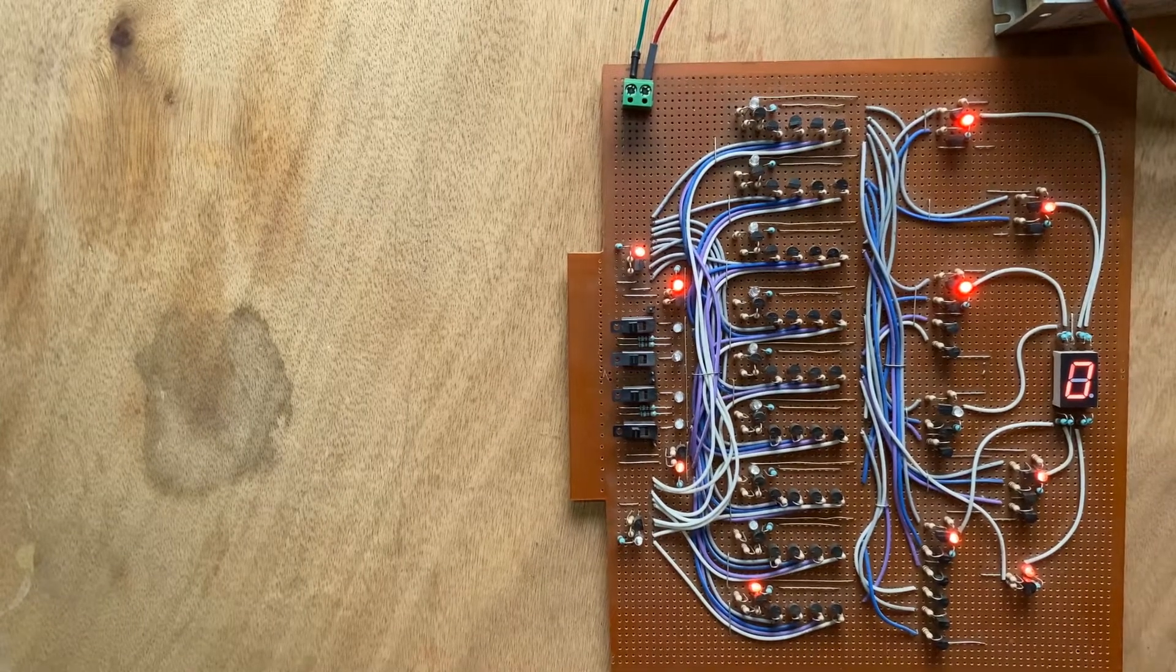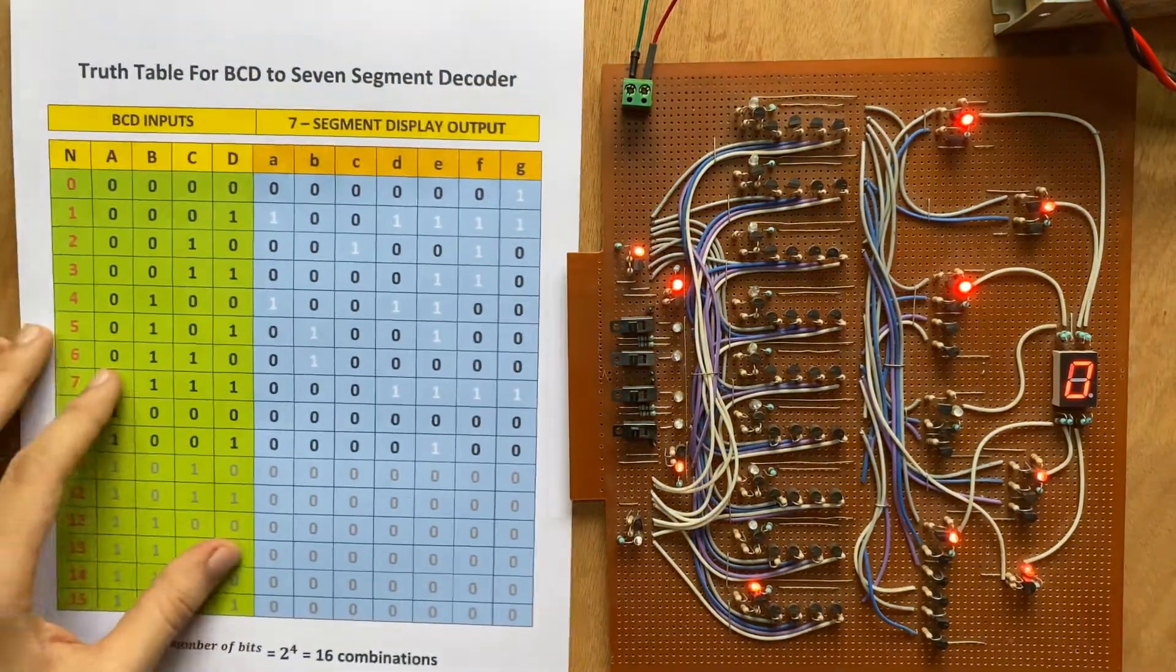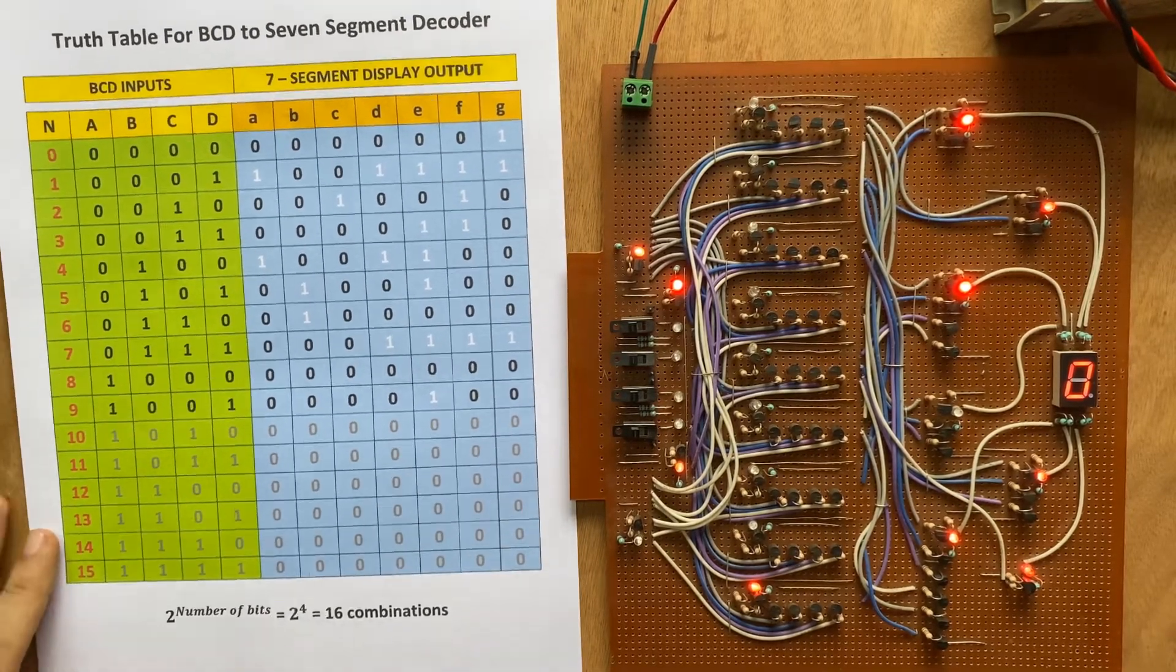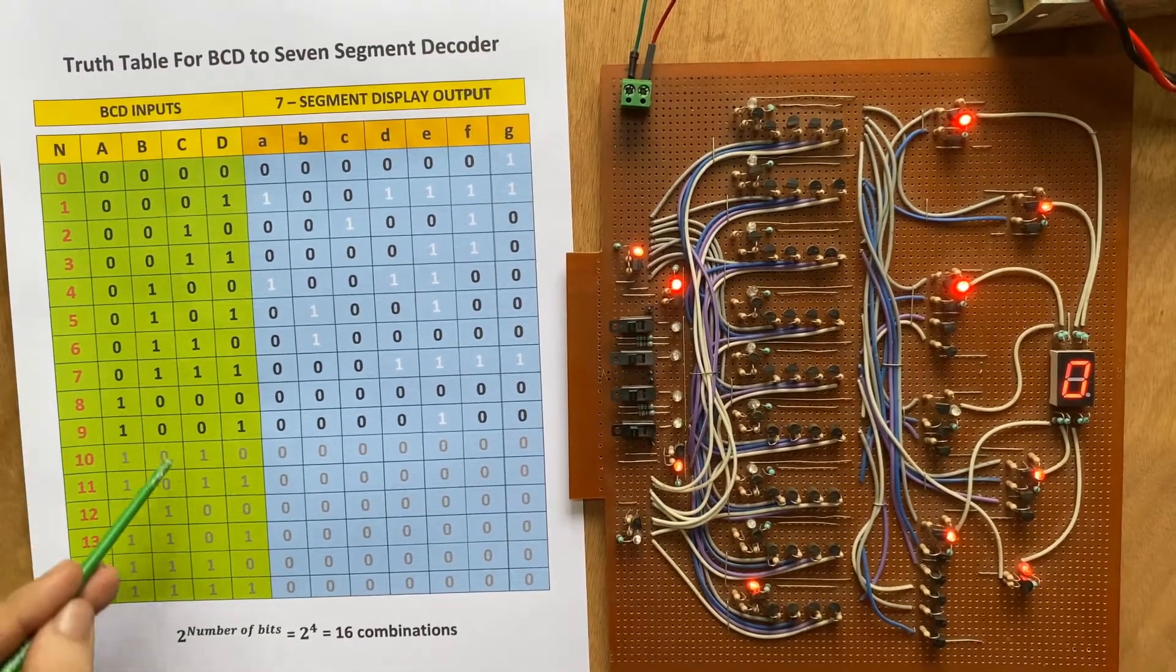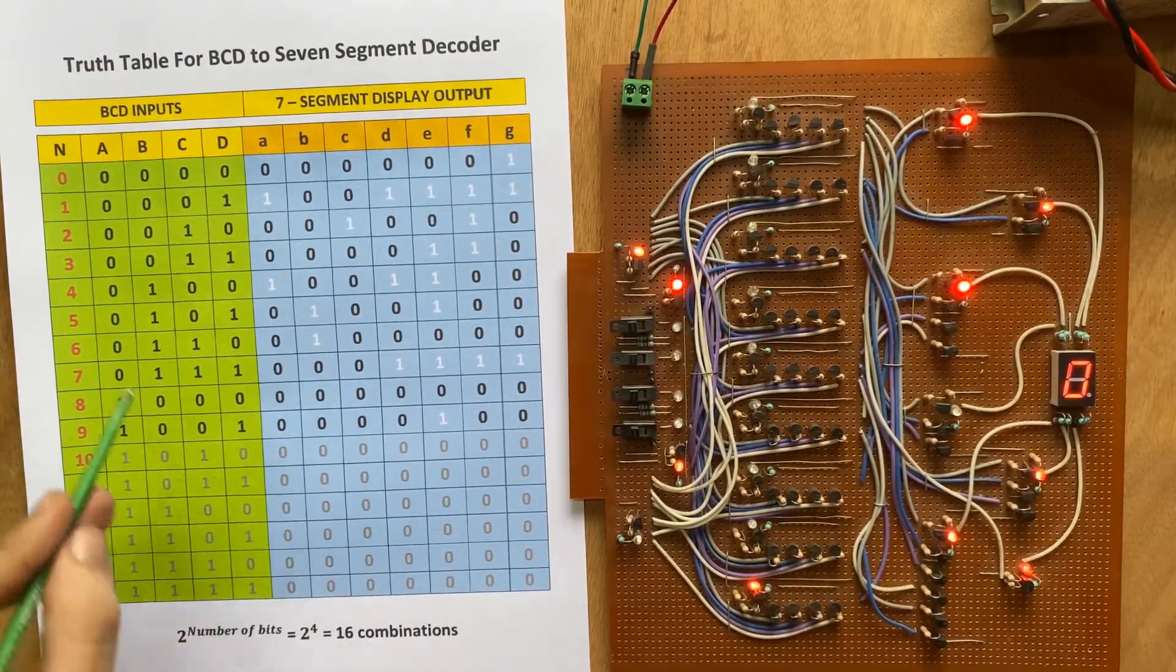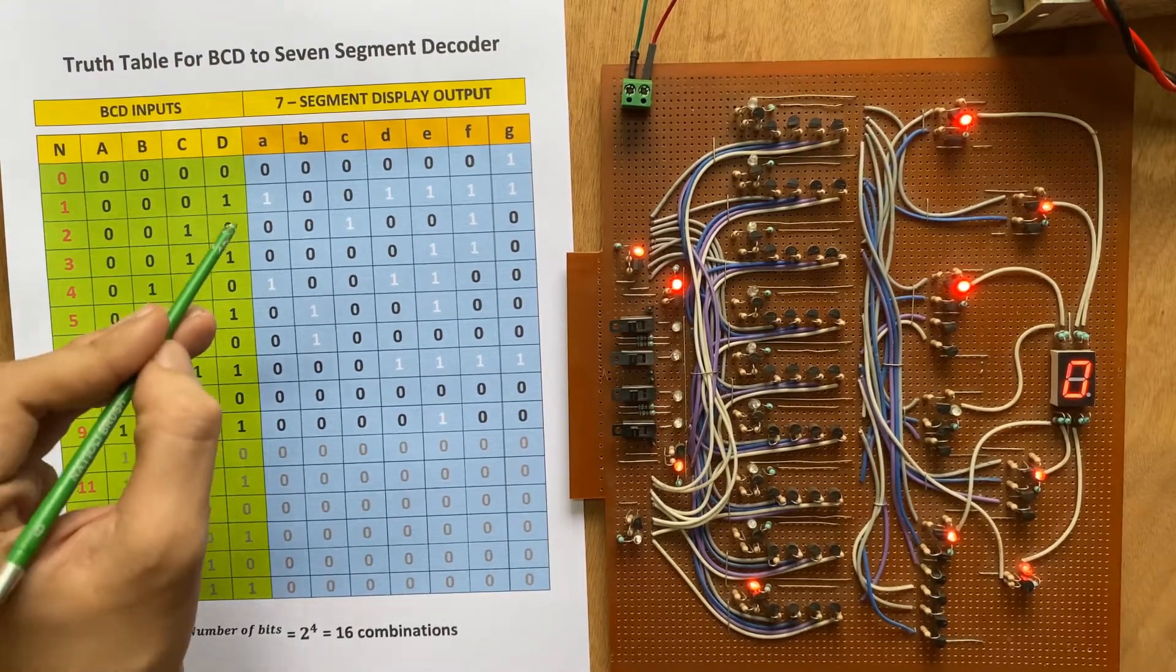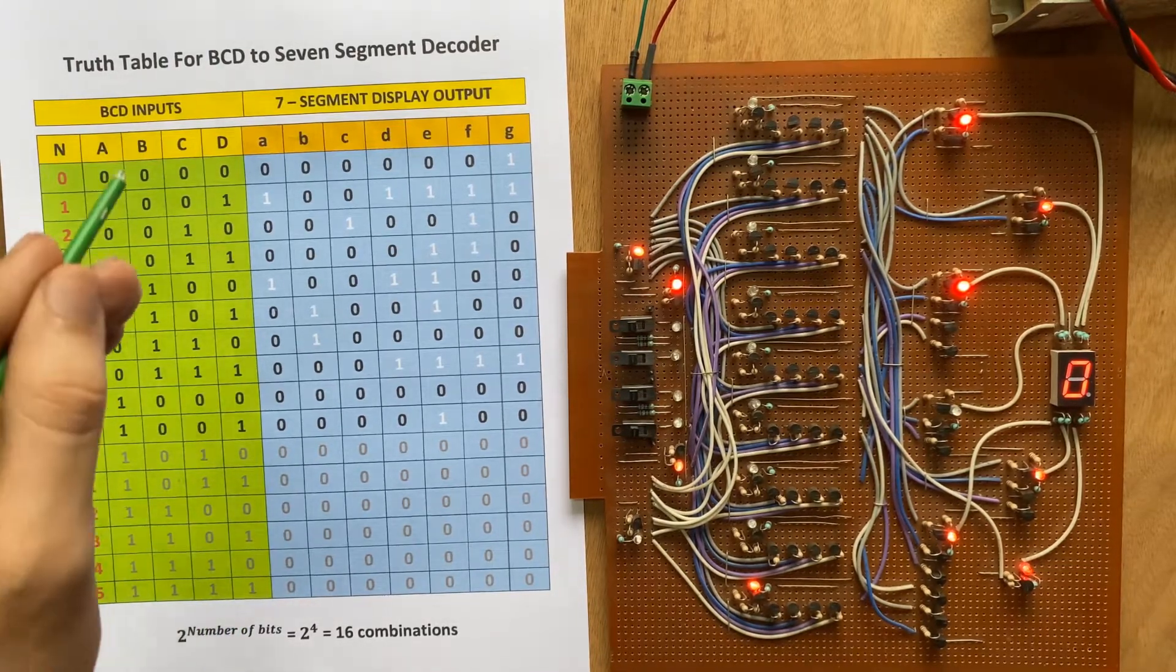Now before moving towards all the input binary set, let's see the truth table of the binary and decimal values so that it will be easy to comprehend all inputs and outputs. So here we can see all the 4-bit inputs and here are their corresponding display outputs. So decimal 0 means 0000, decimal 1 means 0001, decimal 2 means 0010 and so on.